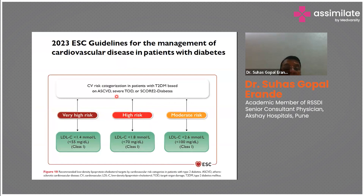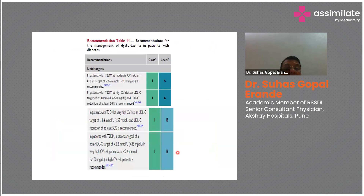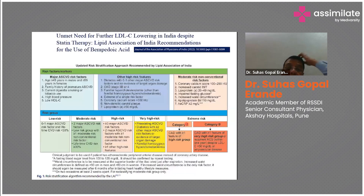The 2023 ESC guidelines use the SCORE2-Diabetes system for CV risk categorization in type 2 diabetes patients: very high risk (LDL target <55), high risk (<70), and moderate risk (<100). In terms of recommendation classes: LDL <100 in moderate-risk T2DM is Class 1 Level A; LDL <70 in high-risk T2DM is Class 1A; and LDL <55 in very high-risk T2DM is Class 1 Level B.